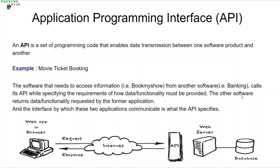In today's world, the software industry has evolved a lot. It's not like we are working on one application and can't communicate with another application. The simplest example of this will be a movie ticket booking application such as BookMyShow. When you start doing a transaction, at that point BookMyShow sends a request to the banking servers to approve the payment, and then the banking servers give some response, and based on that, your ticket is booked.